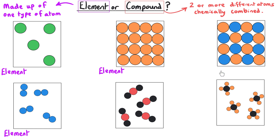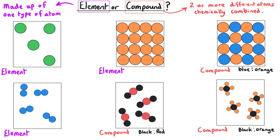In the remaining three, each substance is made of different types of atoms shown as touching, which means they are bonded or chemically combined. The proportions present in each box are different: here we have one red for every two black atoms; in the bottom right there is one black atom for every four orange atoms; and in the top one there is one blue atom for every one orange atom. So we have three compounds and three elements.